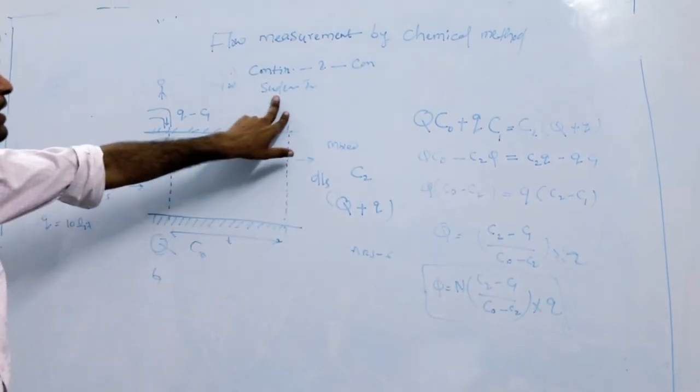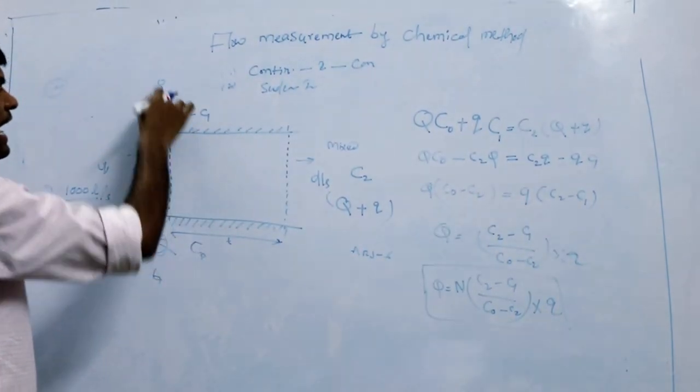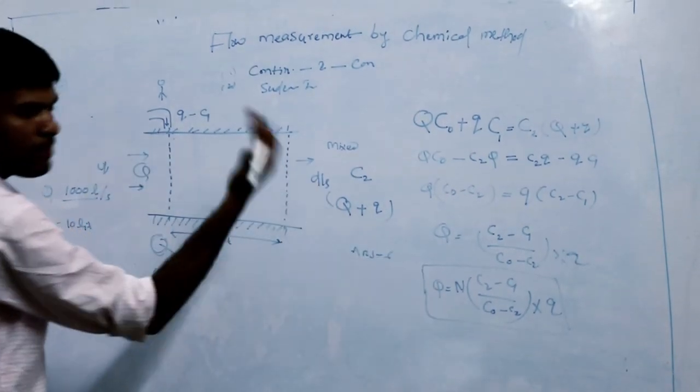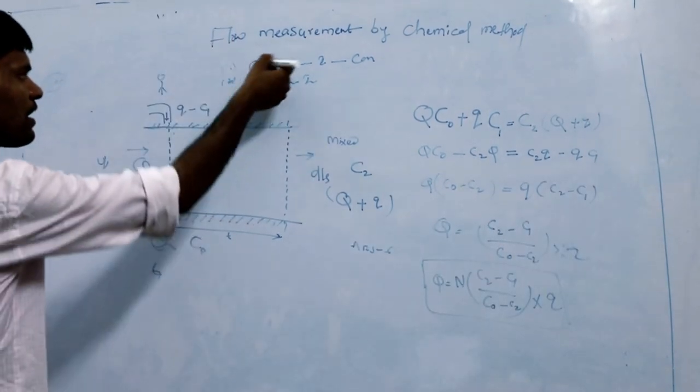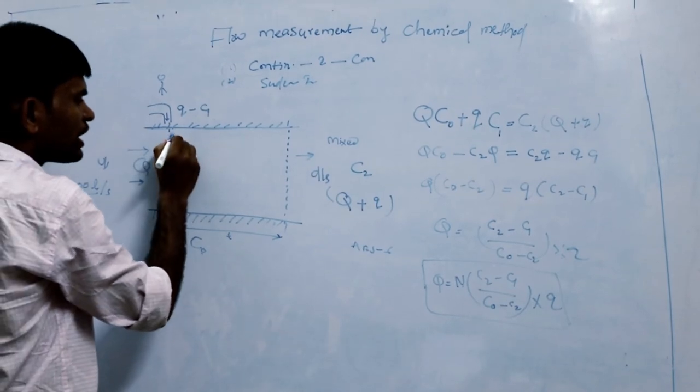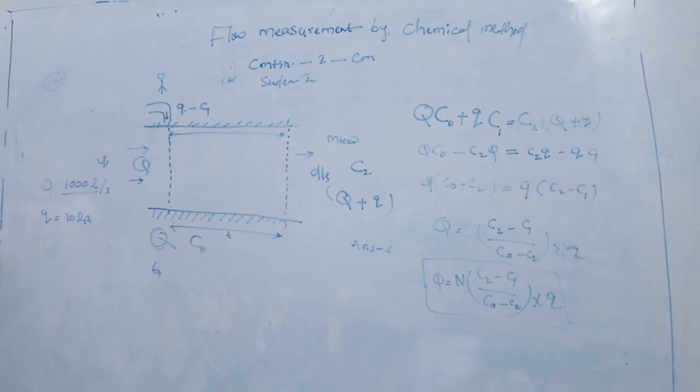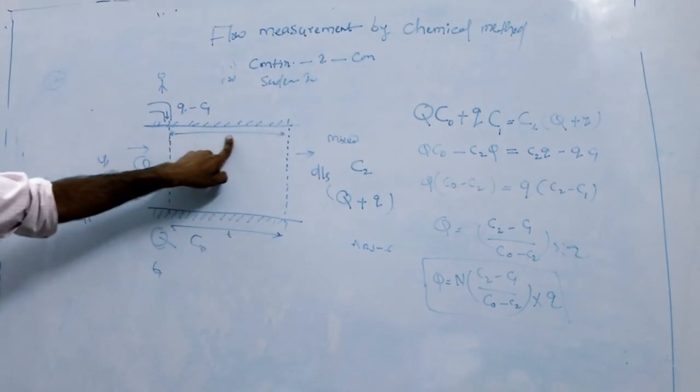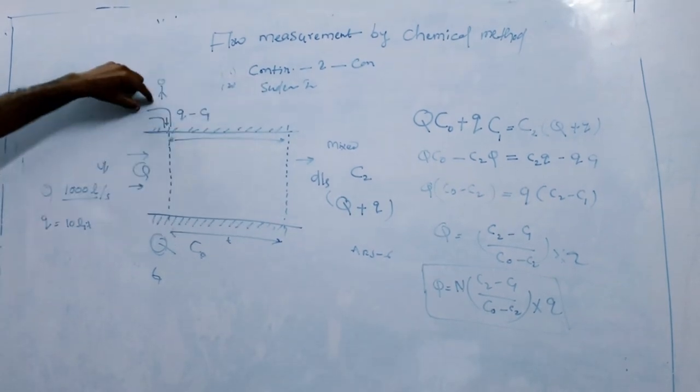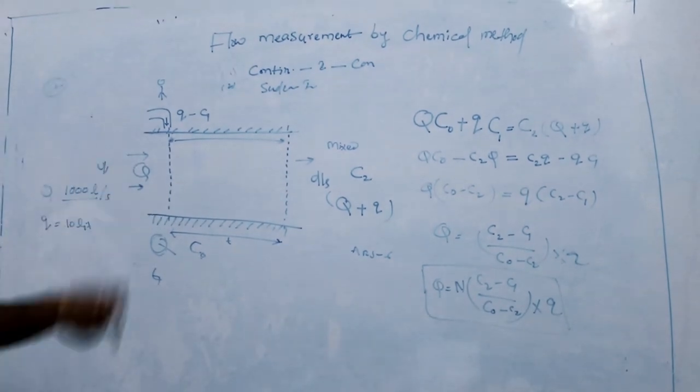In the sudden injection method, here the water has settled and concentration has been measured. But in continuous method, the fluid is added here until this concentration has reached downstream. Up to that time, the fluid is added. But in sudden injection method, you only add one time, suddenly.